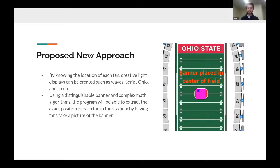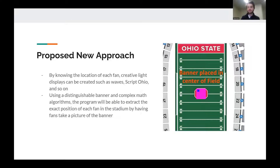Our idea is that we use the locations of where fans are to organize much more detailed displays of lights. The question is, how do you get the location of fans? Our idea is to use a distinguishable banner placed in the center of the field, which we could then use to calculate the exact position of a fan based off a photo taken of that banner.